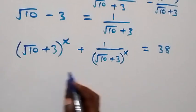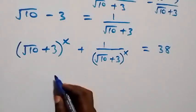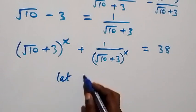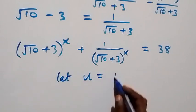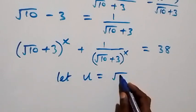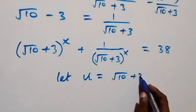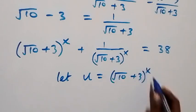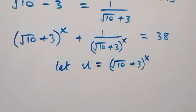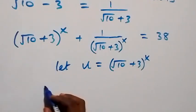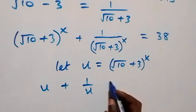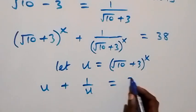When we look at what we have here, we have (root 10 plus 3) raised to power x. Let a letter represent that — let u be equal to (root 10 plus 3) raised to power x. Then when we write this equation down in terms of u, this becomes u plus 1 over u equals to 38.